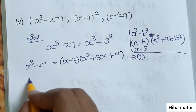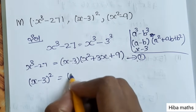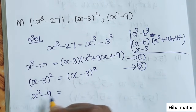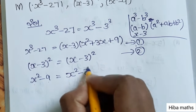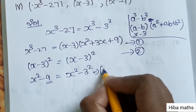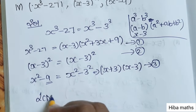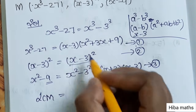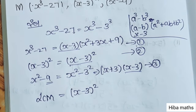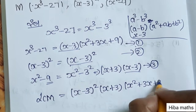The second term is (x-3)², which gives (x-3) to the power of 2. The third term is x² minus 9, written as x² minus 3², which is in a² minus b² format, giving (x+3)(x-3). For the LCM: x minus 3 appears in all three terms, so the highest power is (x-3)². There is no other common factor. We include x plus 3 and x²+3x+9. Therefore LCM = (x-3)²(x+3)(x²+3x+9).